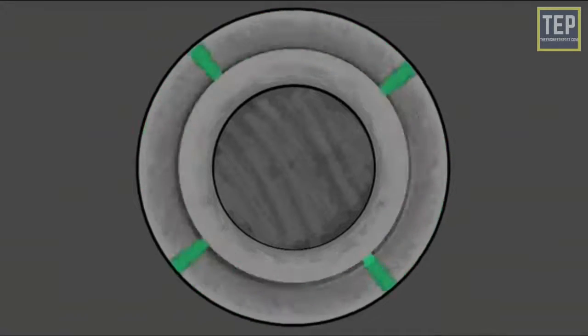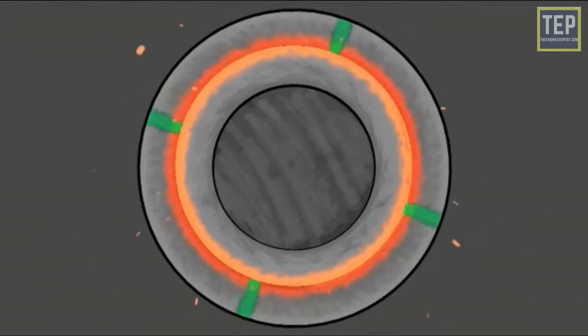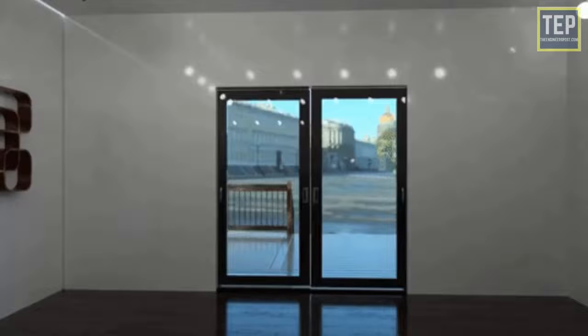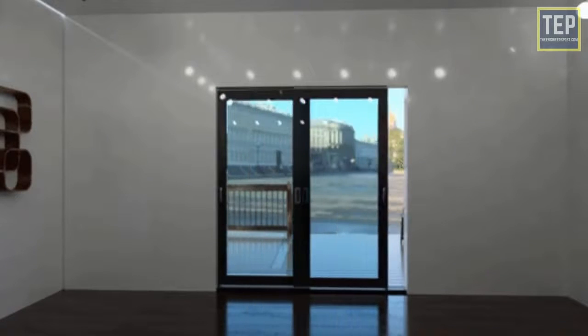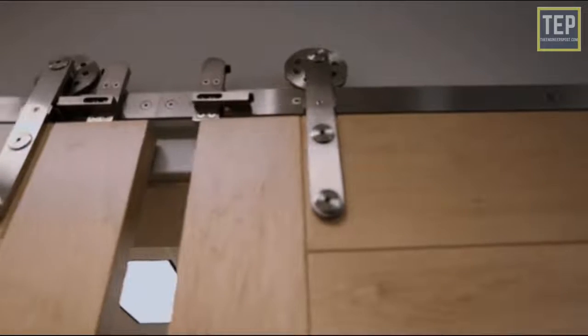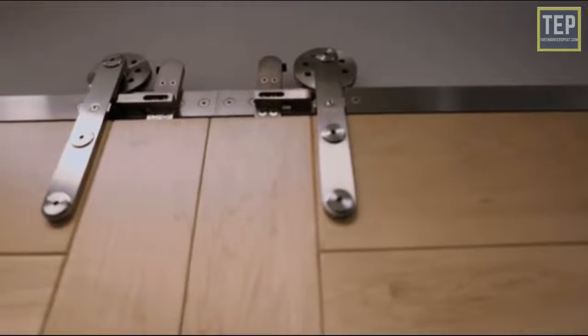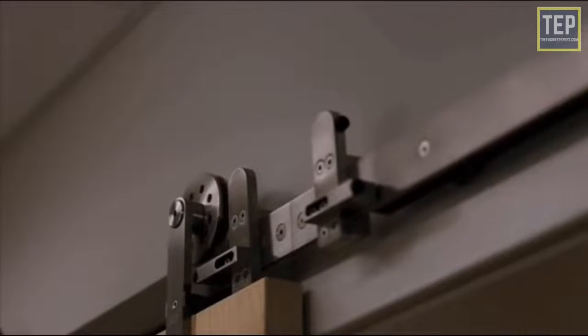A bearing is a machine element that constrains relative motion and is used to reduce friction between moving parts. For example, a sliding door. The door cannot be lifted or removed from its place. The door works like this: it only permits sliding to open it. The possible movement is restricted to sliding motion by bearings.